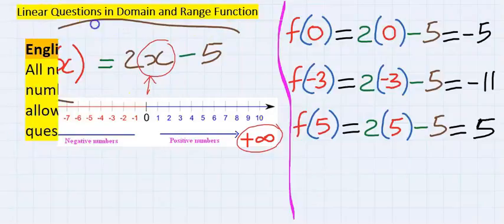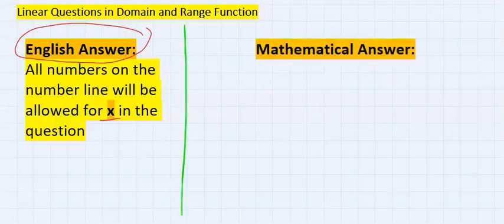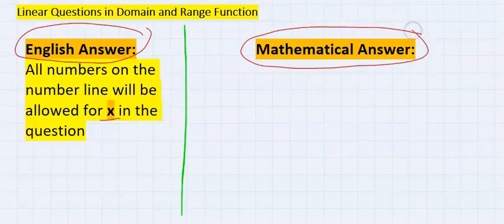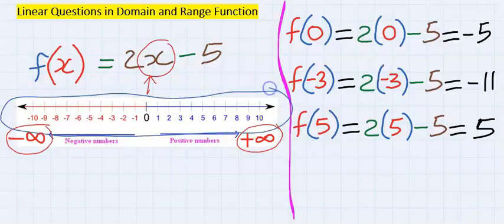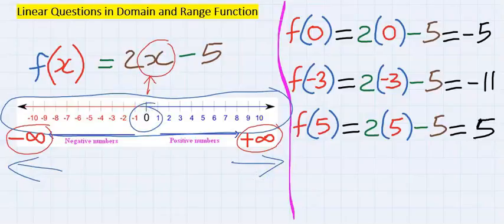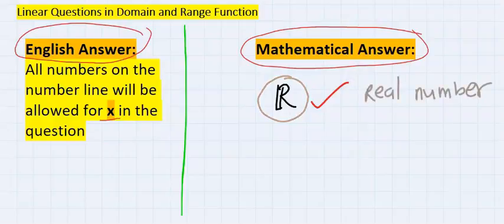The English answer is: all numbers on the number line will be allowed for x in the function. However, in mathematics we represent this in mathematical format. The mathematical answer is simply ℝ, meaning all real numbers on the number line — going towards negative infinity and positive infinity, including zero — are allowed for x.